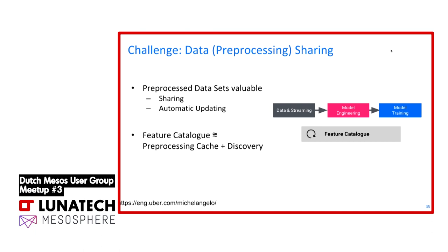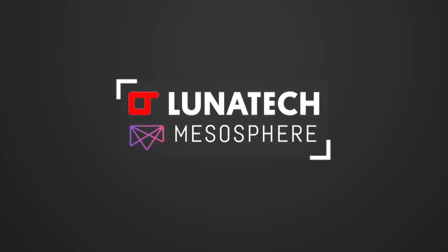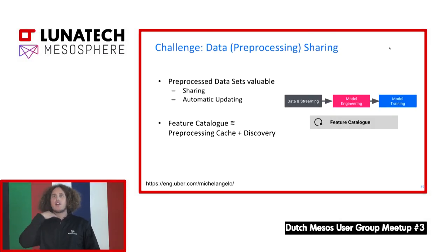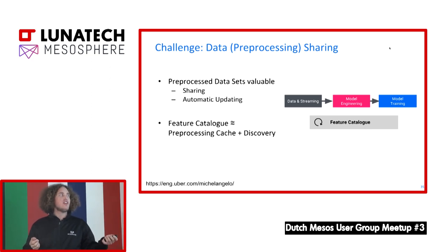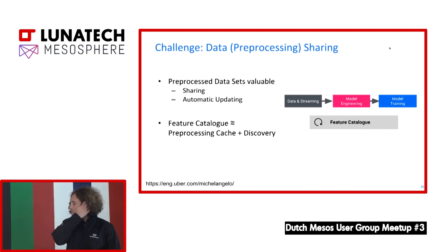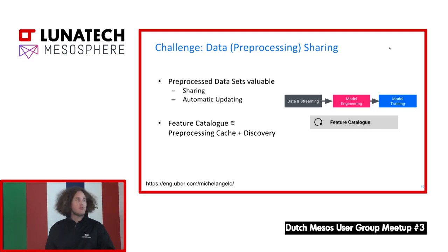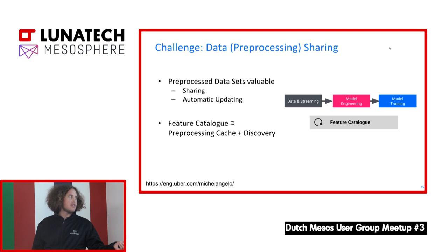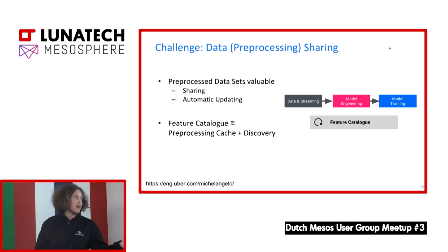If I'm building more complex features — for example at Airbnb, building a fraud model to detect who is gaming the system — I need a representation of the user. The first data scientist cleans that dataset, selects characteristics, maybe transforms them, and can then share that user feature. The next person building another fraud model can simply pick it up from the feature catalog and use it. A great blog post about this is Uber's Michelangelo system — highly recommended for learning about the feature store idea.